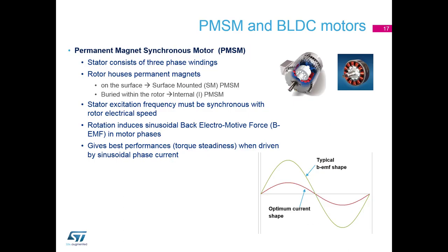Okay, now let's talk about the Permanent Magnet Synchronous motors and Brushless DC motors. First, Permanent Magnet Synchronous motor, PMSM. Its construction of the stator consists of three phase windings. Rotor is constructed from permanent magnets that can be either glued on the surface, which creates a surface-mounted Permanent Magnet Synchronous motors, or buried within the rotor, so-called internal Permanent Magnet Synchronous motors. The stator excitation frequency must be synchronous with the rotor electrical speed. The rotation induces a back EMF or back electromagnetic force, which has a sinusoidal shape. The motor gives best performance and torque steadiness when it's driven by a sinusoidal phase current from our power stage.